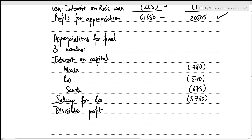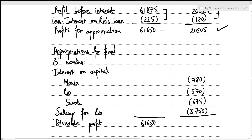For the first nine months, the divisible profit is simply the profit for appropriation: $61,650. For the remaining three months: 20,505 − 780 − 570 − 675 − 3,750 = $14,730 divisible profit.